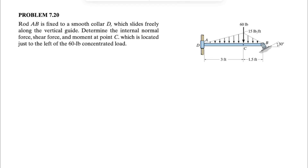We have question 20 from chapter 7 of the Hibbeler textbook in Geomechanics. We have this rod AB that is fixed to a smooth collar D, which slides freely along the vertical guide, and we need to determine the internal normal force, shear force, and bending moment at point C, which is located just to the left of the 60-pound concentrated load.